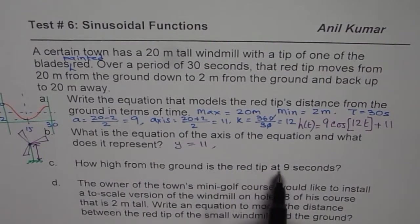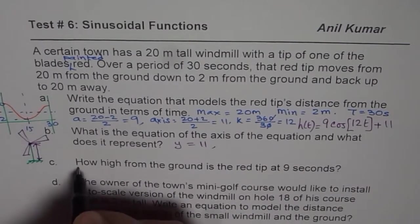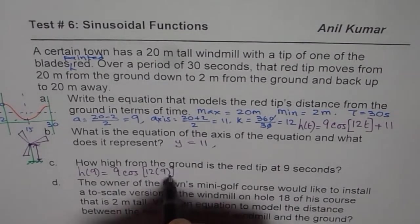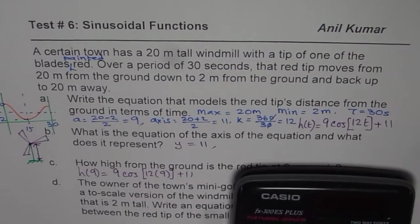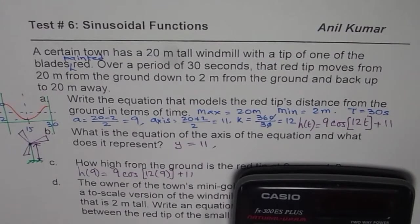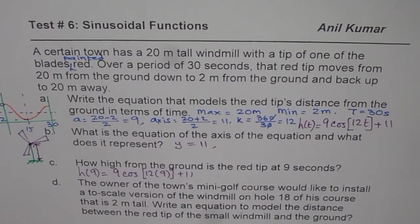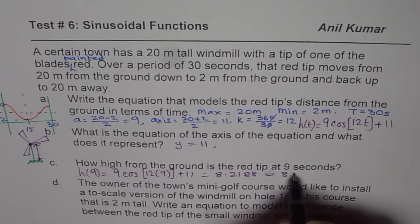So how high from the ground is the red tip at 9 seconds, that is part C. To find that, we can substitute 9 here for T and find the answer. That means we need to find what is H of 9 equals to. So H of 9 is 9 cos of 12 times 9 plus 11. And let us use our calculator to calculate this answer. So it should be in degrees. The calculator settings should be in degrees, which is 3 for this calculator. And now let us multiply. So 3 times cos of within brackets 12 times 9, bracket close, plus 11. And that gives us 8.2188. So we can approximate this to 8.22 meters.